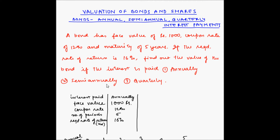Now let's move to semi-annual interest payments and note down how these values will change. Face value remains the same at 1000 rupees. The coupon rate was yearly at 12%; now if we are paying interest half-yearly then the coupon rate will also become half, so this is 6%.